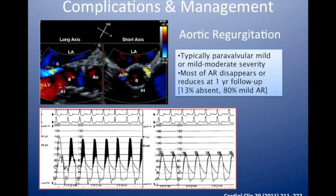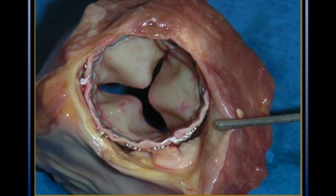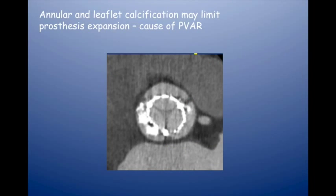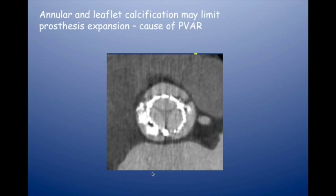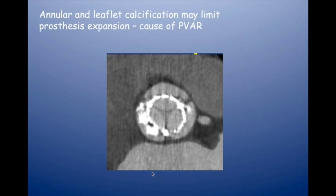The causes of paravalvular leak include inadequate expansion of the valve, the wrong valve size, or too much calcium preventing expansion. Sometimes there's non-circular expansion, which happens more with self-expanding valves than balloon-expandable ones. You can see a lot of calcium outside the valve frame resulting in a D-shaped expansion of the prosthesis — that might lead to paravalvular regurgitation on the outside and suboptimal leaflet function on the inside leading to valvular regurgitation.